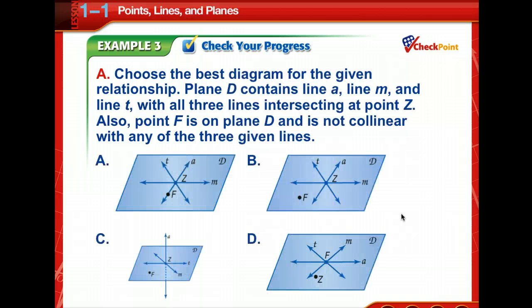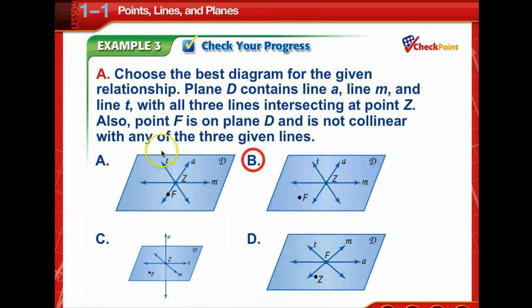Now time to check your progress. Which one of these lines would work as a diagram for what they're telling you? So pause for a moment and pick out your diagram. Okay. Answer B. Because look at this one. It says plane D contains line A, M, and T. Well, plane D on this one is not containing line A. It intersects. Okay. So that's why that one's thrown out.